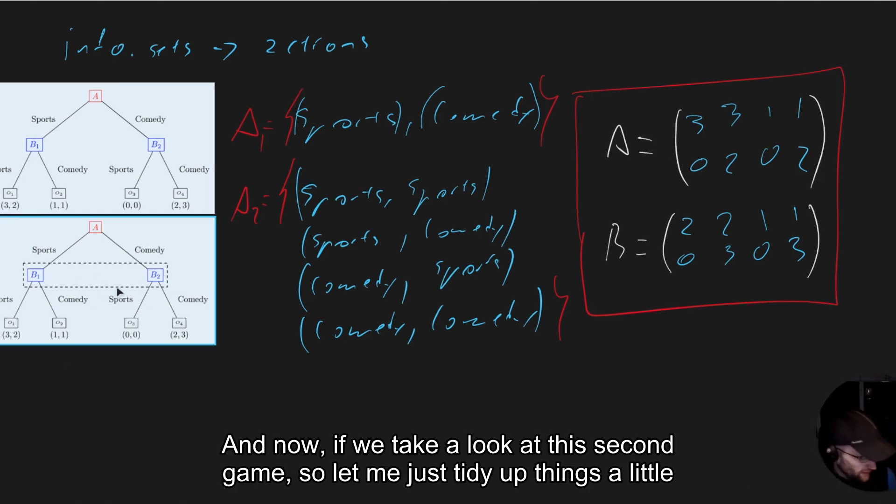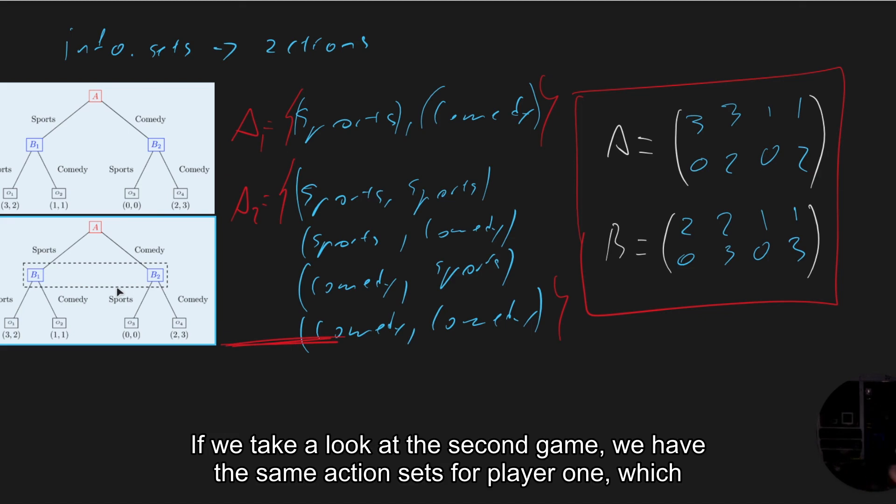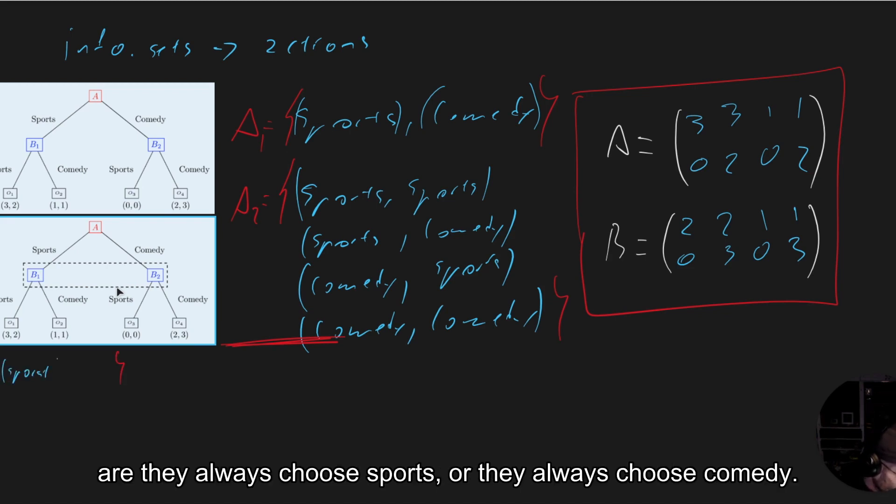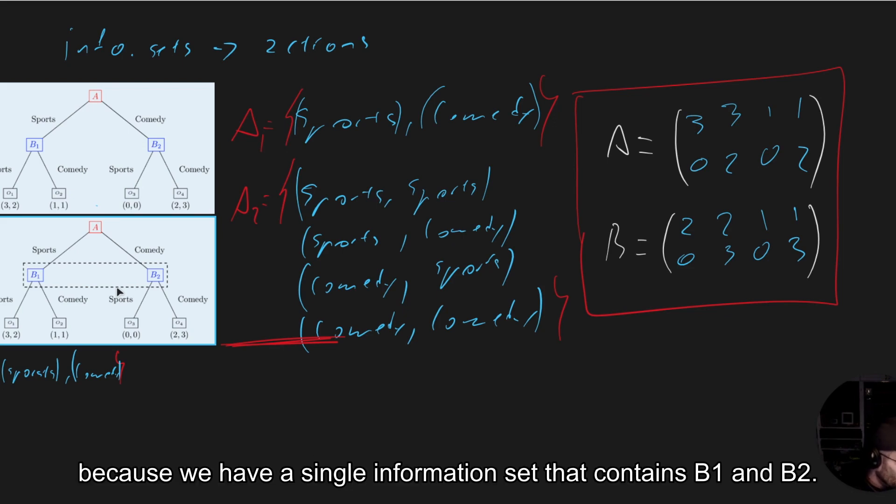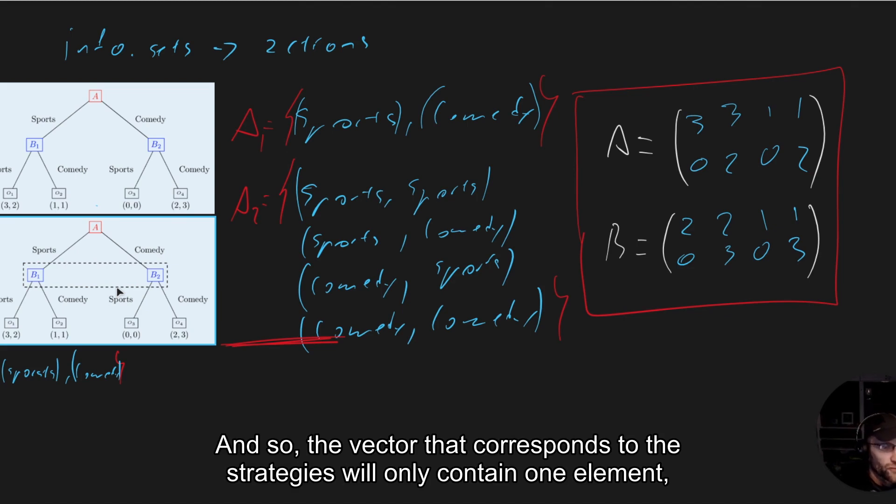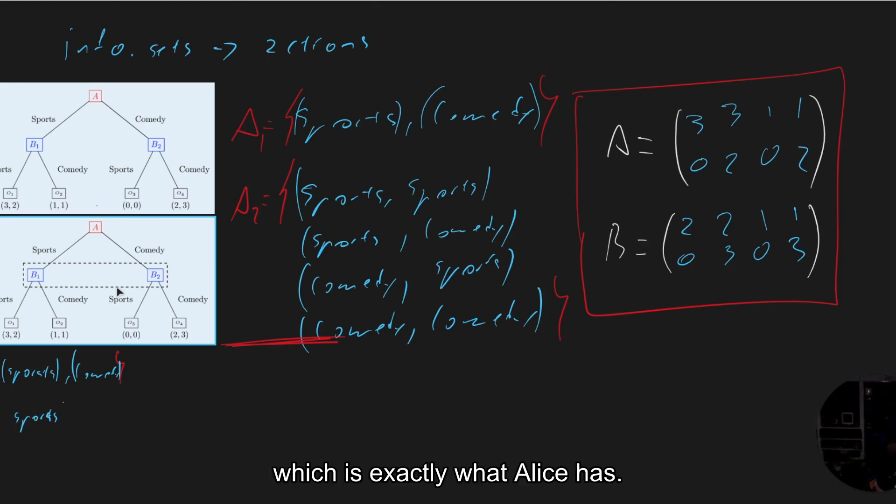And now if we take a look at this second game, if we take a look at the second game, we have the same action sets for player one, which are they always choose sports or they always choose comedy. But now our strategies for player two, for Bob, are going to actually be a bit simpler because we have a single information set that contains B1 and B2. And so the vector that is going to correspond to the strategies will only contain one element, which is exactly what Alice has.